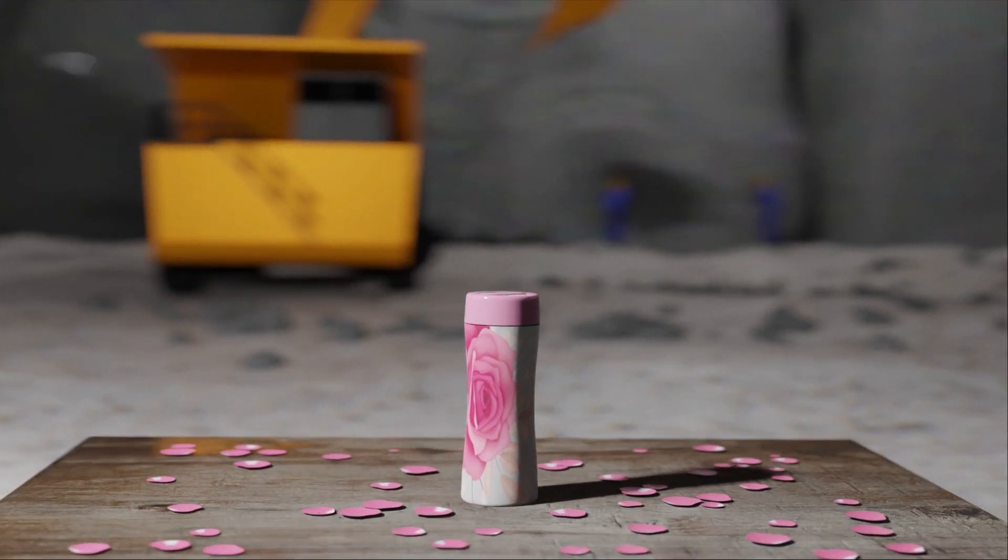This is talcum powder and it is made up of a naturally occurring silicate mineral which is mined from earth. It is used in many cosmetics and to make skin dry. This animation is to understand the process of how talcum powder is made.